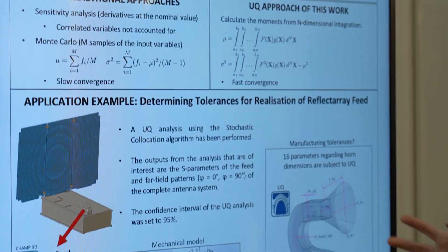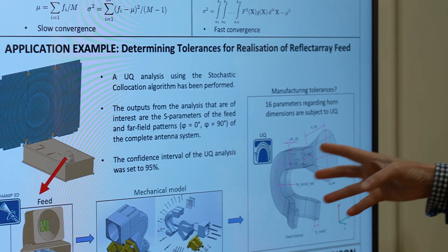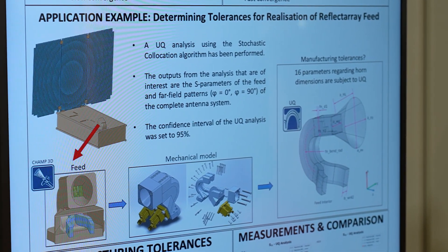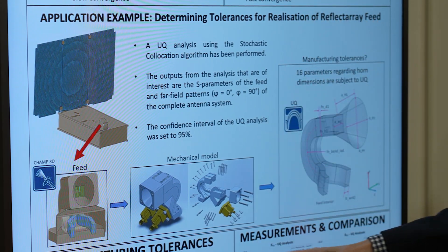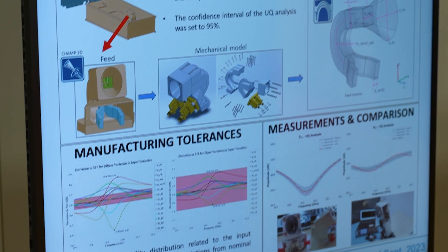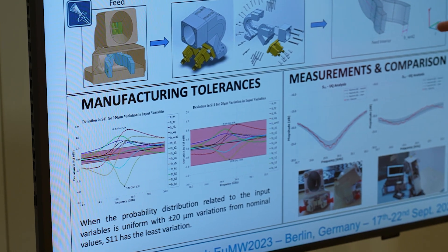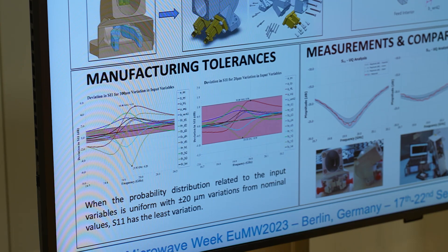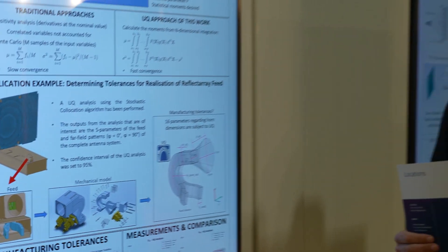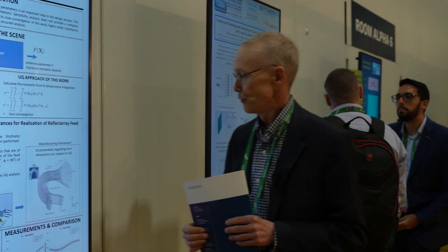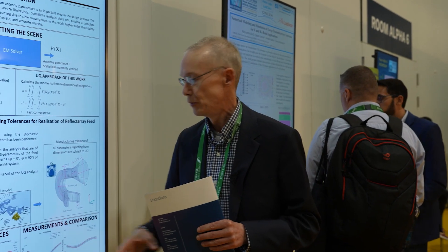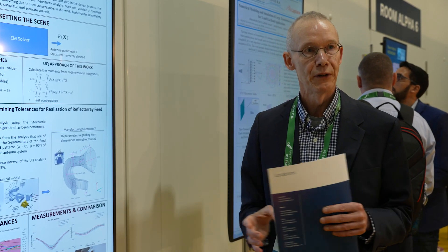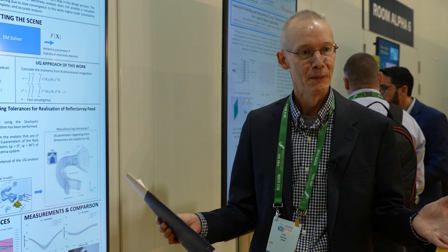We have tried this for a horn on a CubeSat illuminating a reflector array. We can use this analysis to determine what the tolerances should be in order for, for instance, the scattering parameters to be within a certain range — plus or minus 1 dB. Using the uncertainty quantification analysis, we get the result that you need 20 micron tolerances for the input parameters to achieve a satisfactory result. This is my message.